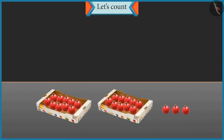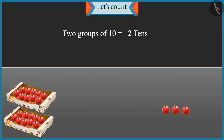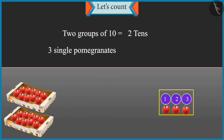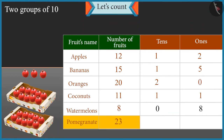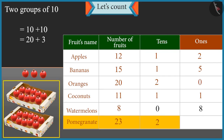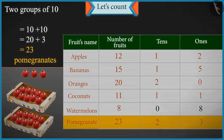Chotu, I have counted the pomegranates and placed them in groups of tens. Can you tell me how many pomegranates are there? Uncle, there are two groups of tens, that means two tens and three single pomegranates, that means three ones. There are twenty-three pomegranates. Two groups of tens — ten and ten is twenty — and there are three more, so twenty-one, twenty-two and twenty-three. There are twenty-three pomegranates.